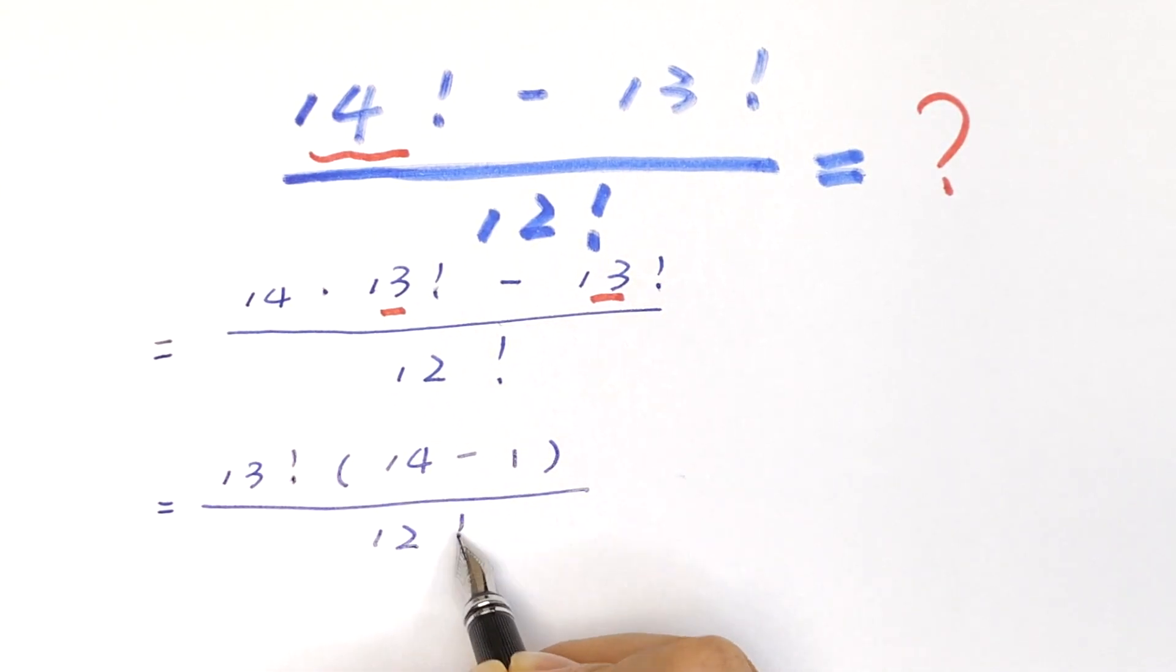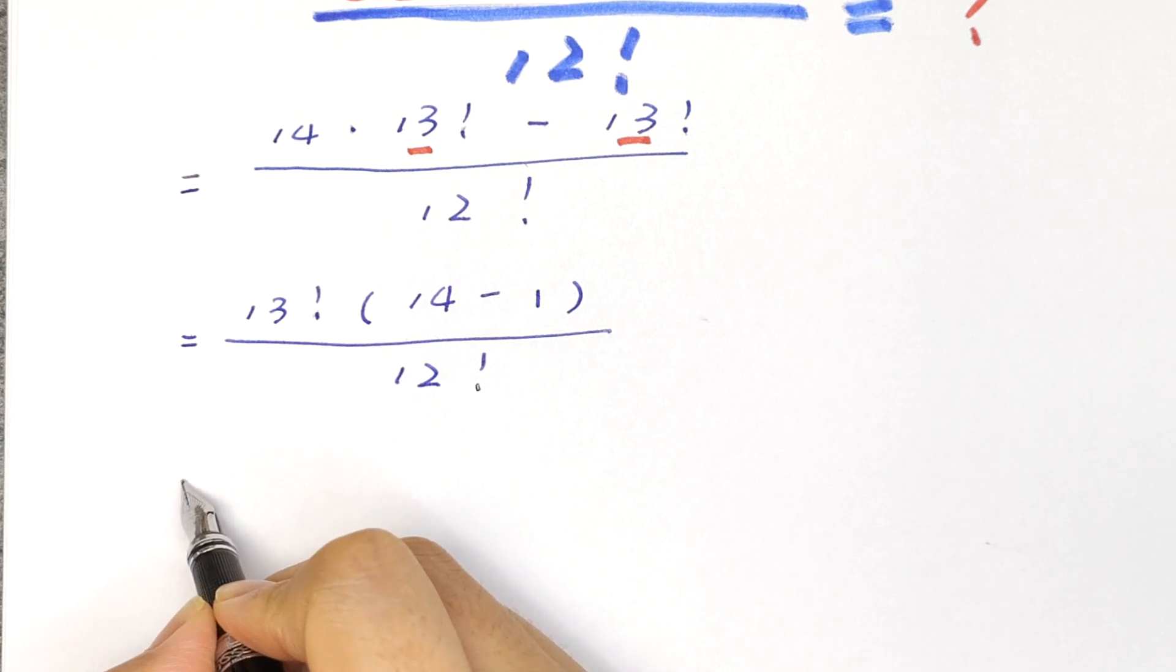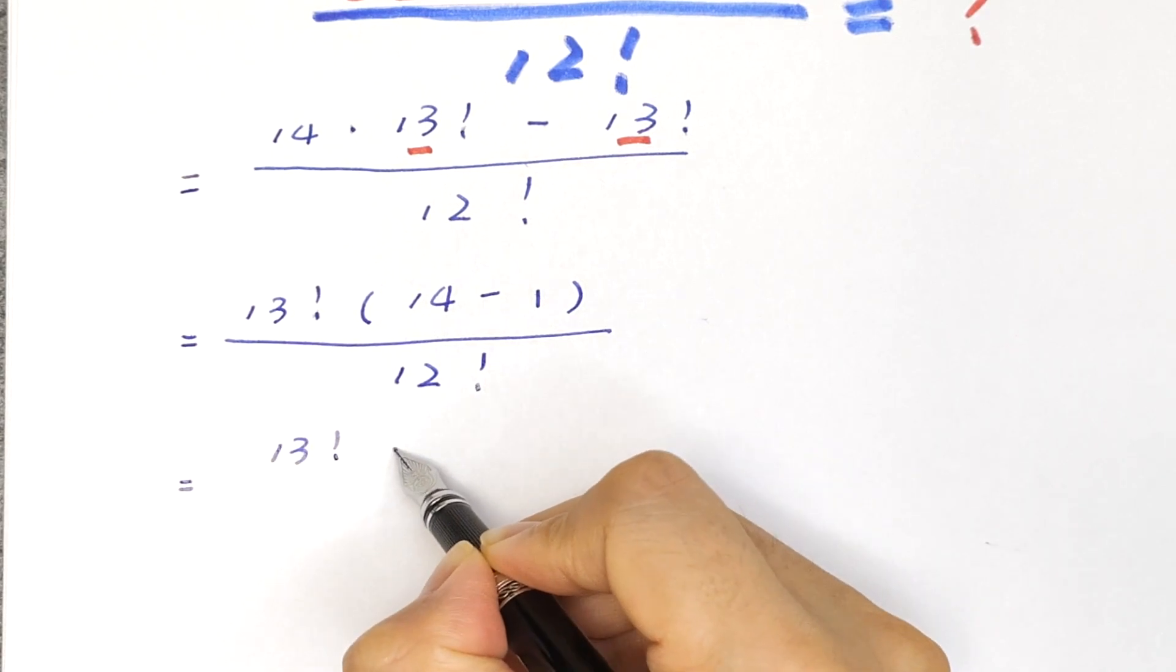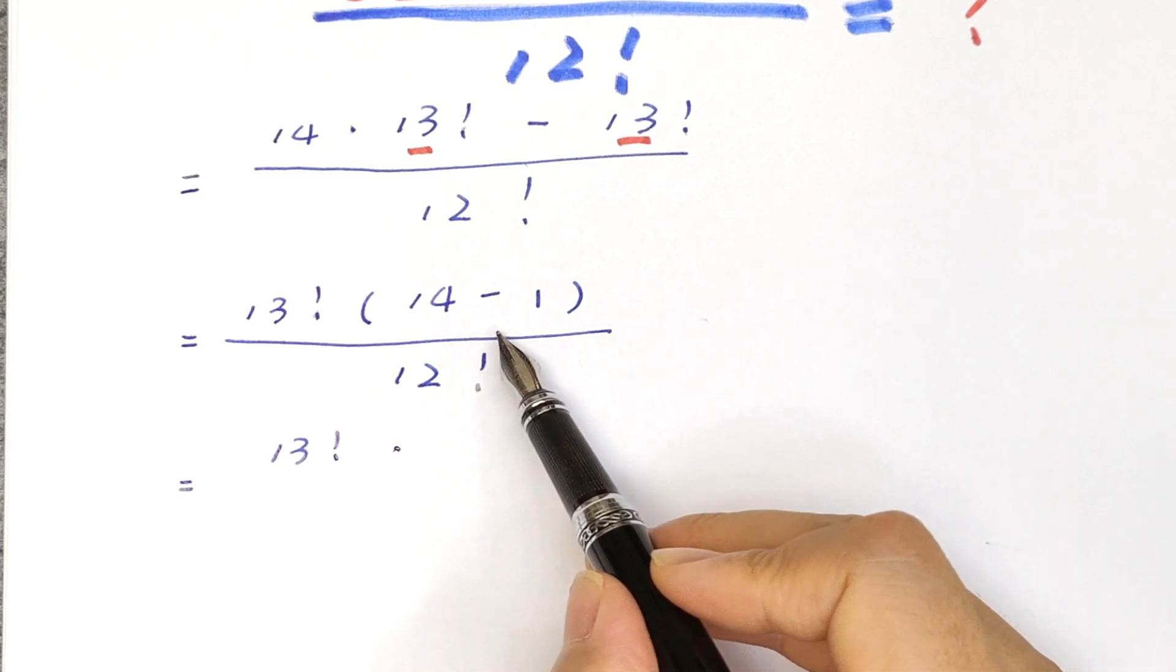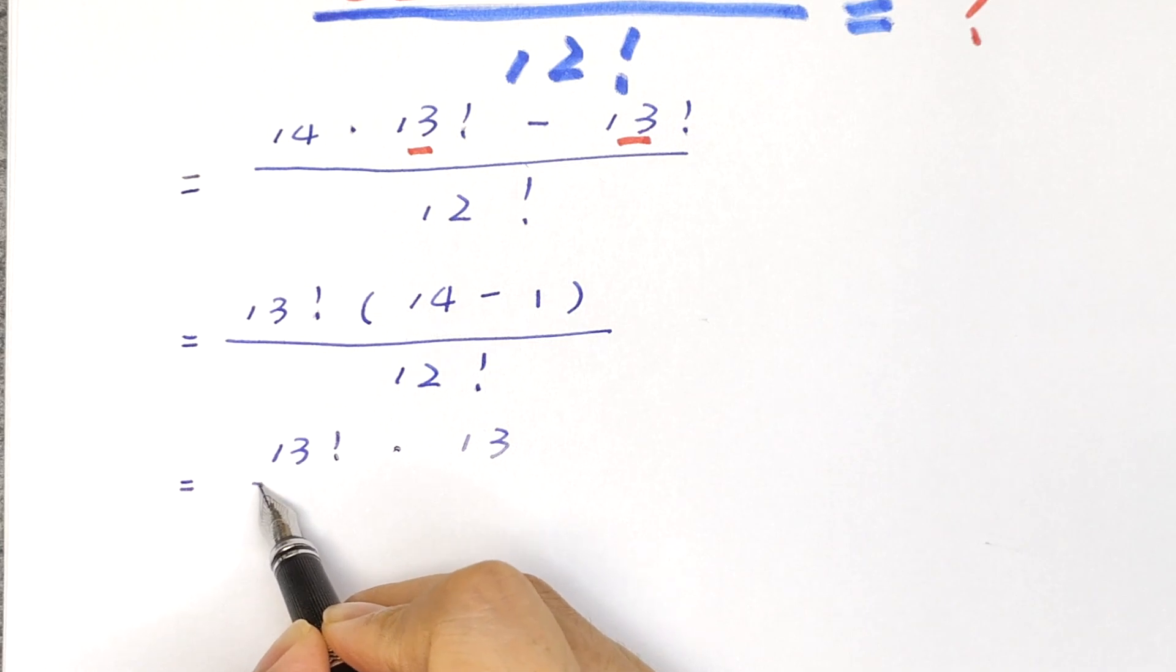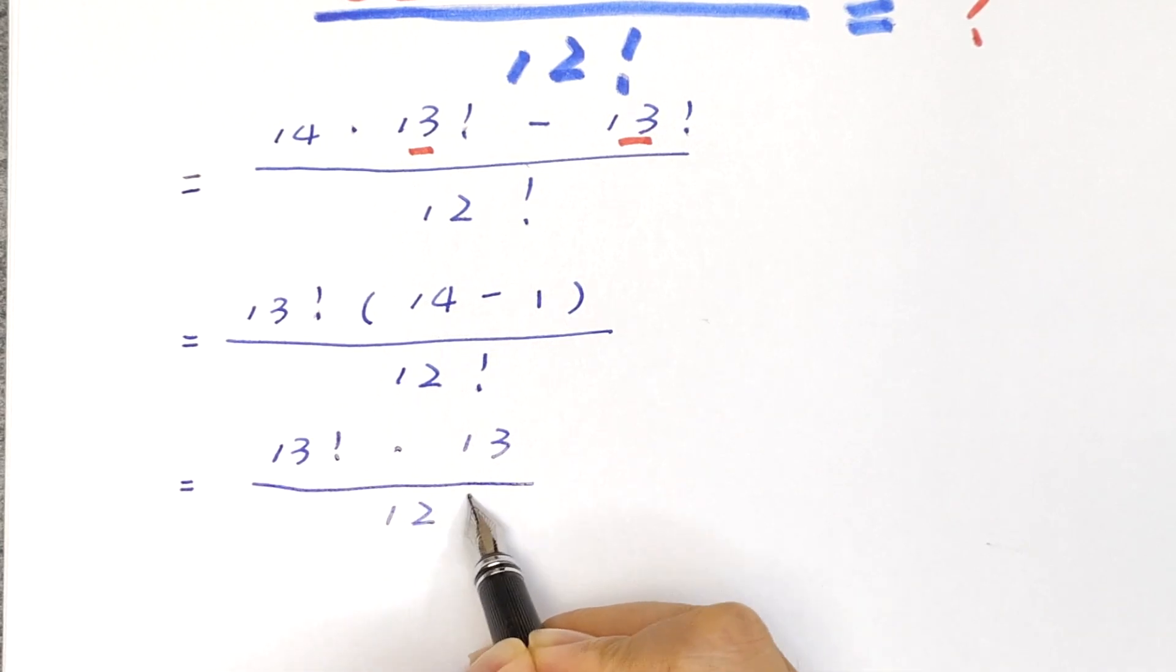This equals 13 factorial times (14 minus 1), which equals 13 factorial times 13, divided by 12 factorial.